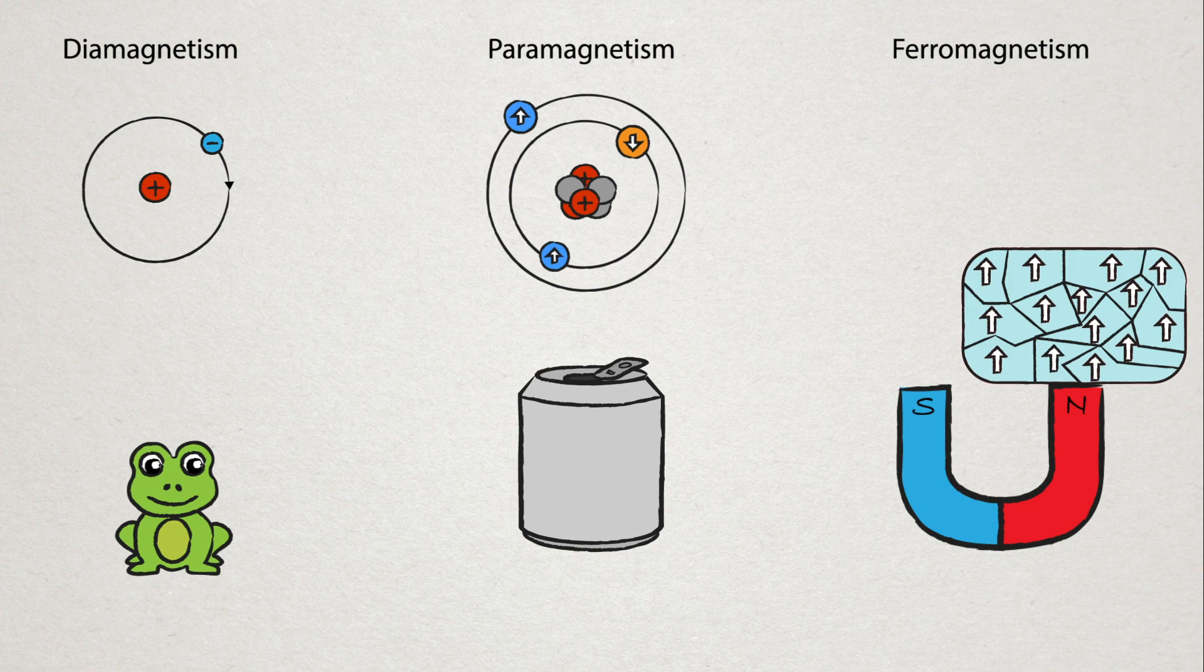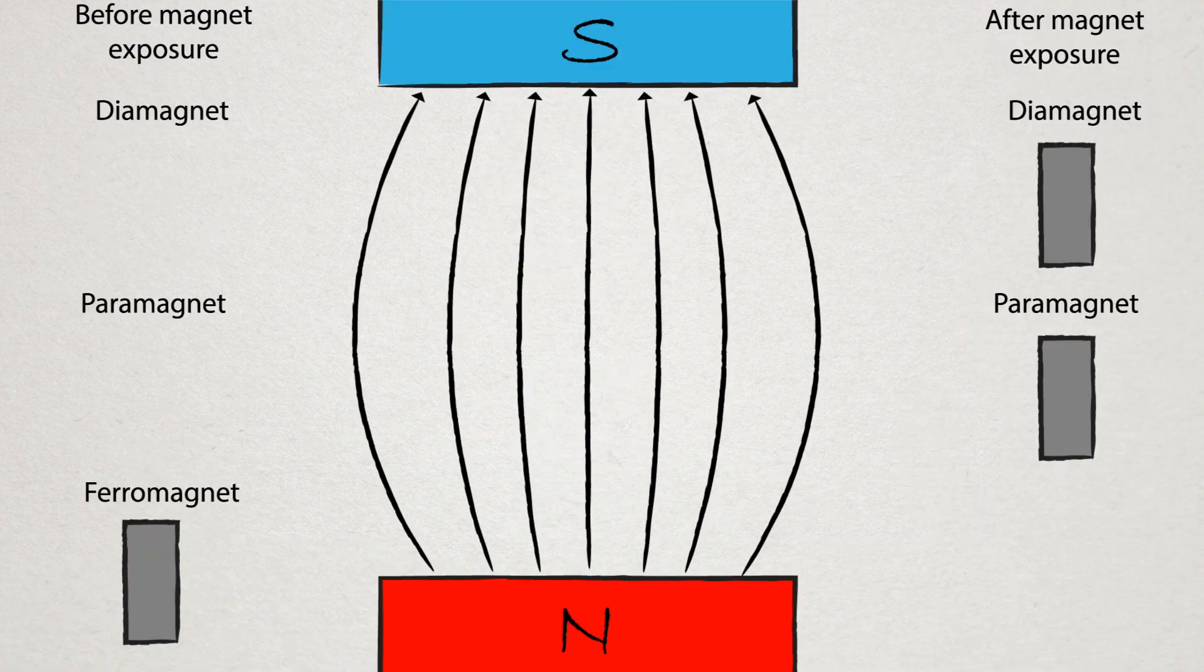This is usually what people are thinking about when they talk about magnets. When they are exposed to a magnetic field, they tend to align with the magnetic field, just like with paramagnets.